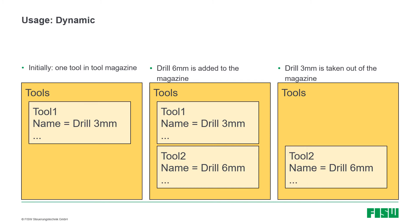Now while using the machine I add another drill to the tool magazine — a six millimeter drill. In that case I would add an OPC UA node to the tools list. That new node represents the six millimeter drill, so all of its components are set to its values. If I later decide to remove the three millimeter drill from the machine tool magazine, I will also delete the node representing it, leaving the list with only the six millimeter drill.